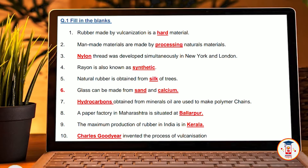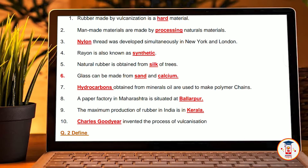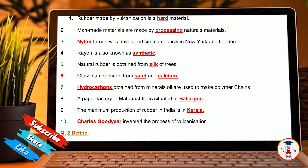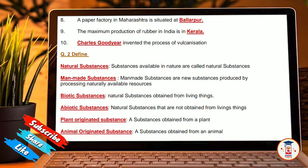Hydrocarbons are obtained from mineral oil. Mineral oil is made to use petroleum chemicals. A paper factory in Maharashtra is situated in Ballarpur. The maximum production of rubber in India is in Kerala. Charles Goodyear invented the process of vulcanization.